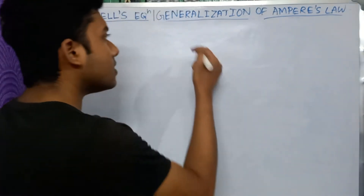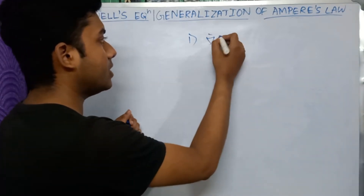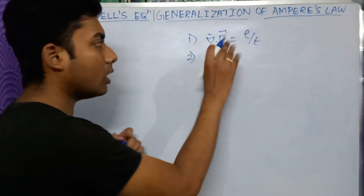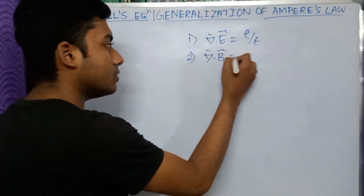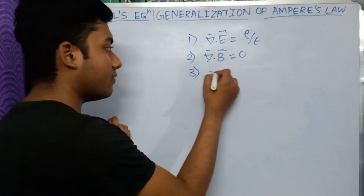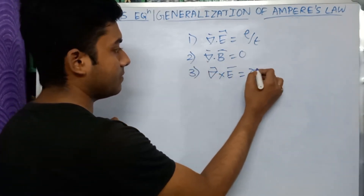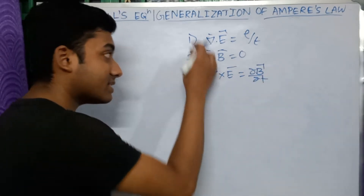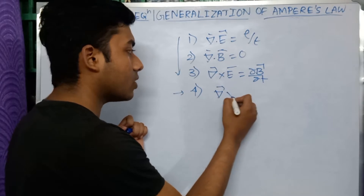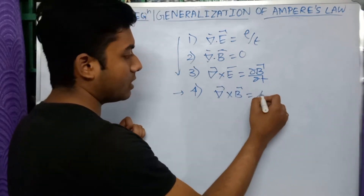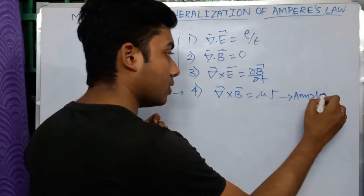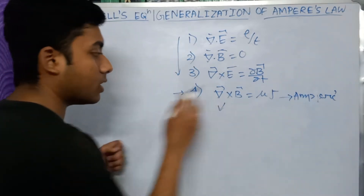The four fundamental equations are: number one, del dot E equals rho over epsilon (electrostatics); number two, del dot B equals zero, which always holds; number three, Faraday's law: del cross E equals minus del B over del t; and number four, del cross B equals mu J. This fourth equation is Ampere's circular law, since it involves curl of B equals mu J.